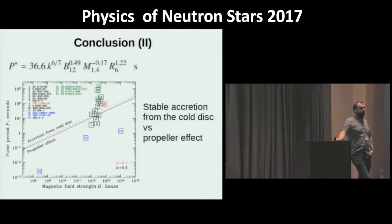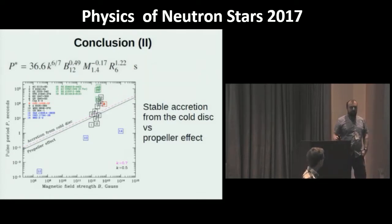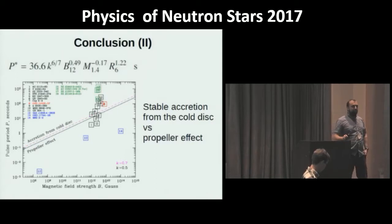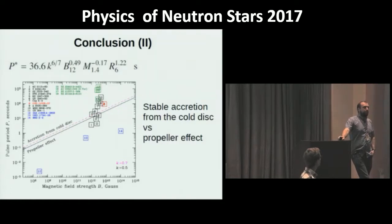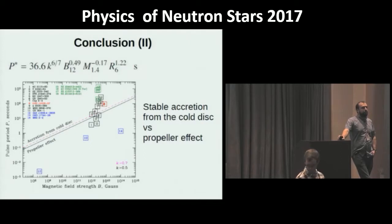Question: Did you see any evolution of the spin period between the accretion and propeller phases — a clear change between spin-up and spin-down? Unfortunately, we do not see pulsations in the low-flux state because the count rate is too low. Spin periods for these systems are determined when they are bright, during the accretion phase.